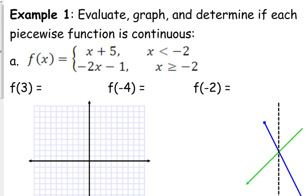Let's start by evaluating. If I ask you what is f of 3, here's how we evaluate. We don't plug it into both pieces — you do not plug it into both pieces. You're going to get one answer because these are functions. Function means for every x there is only one y. So we don't have two answers for f of 3. You've got to decide where does 3 fall — is 3 less than negative 2 or greater than negative 2? It is greater than negative 2.